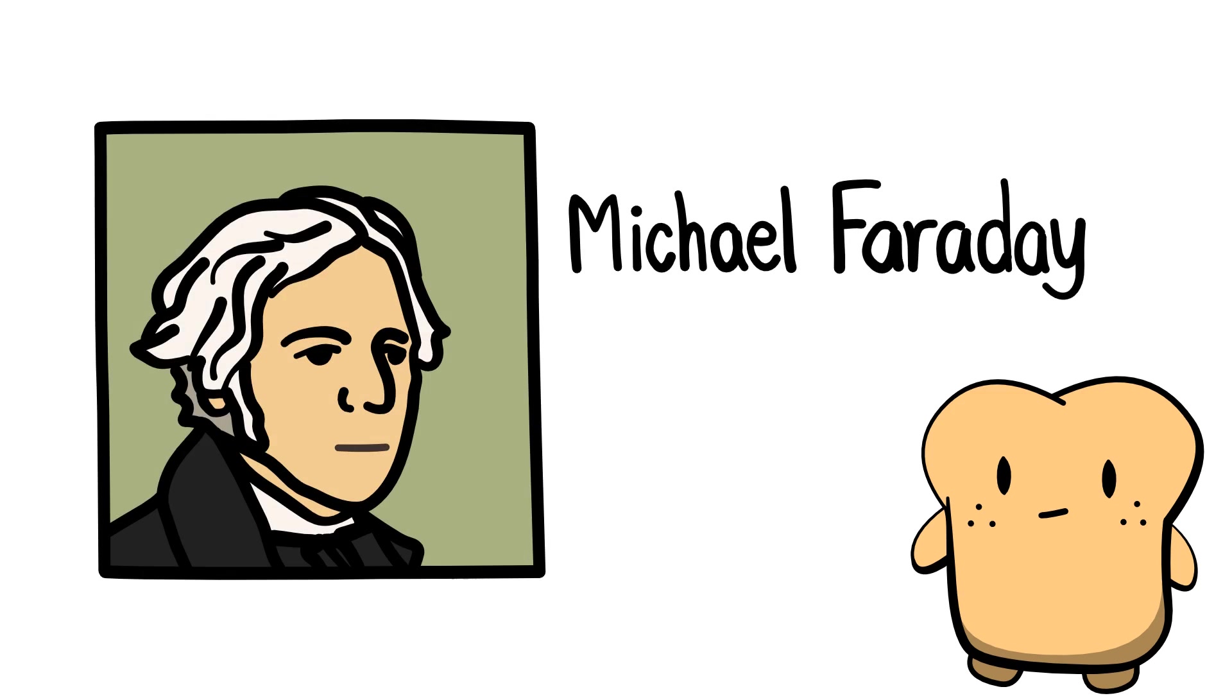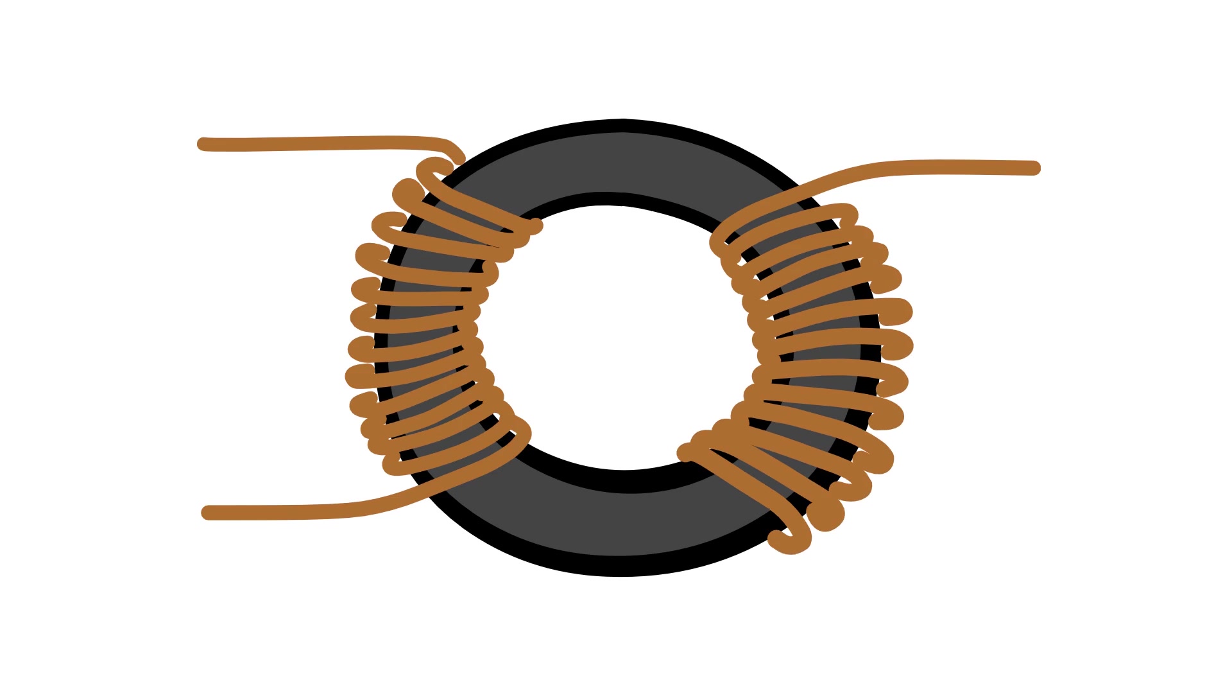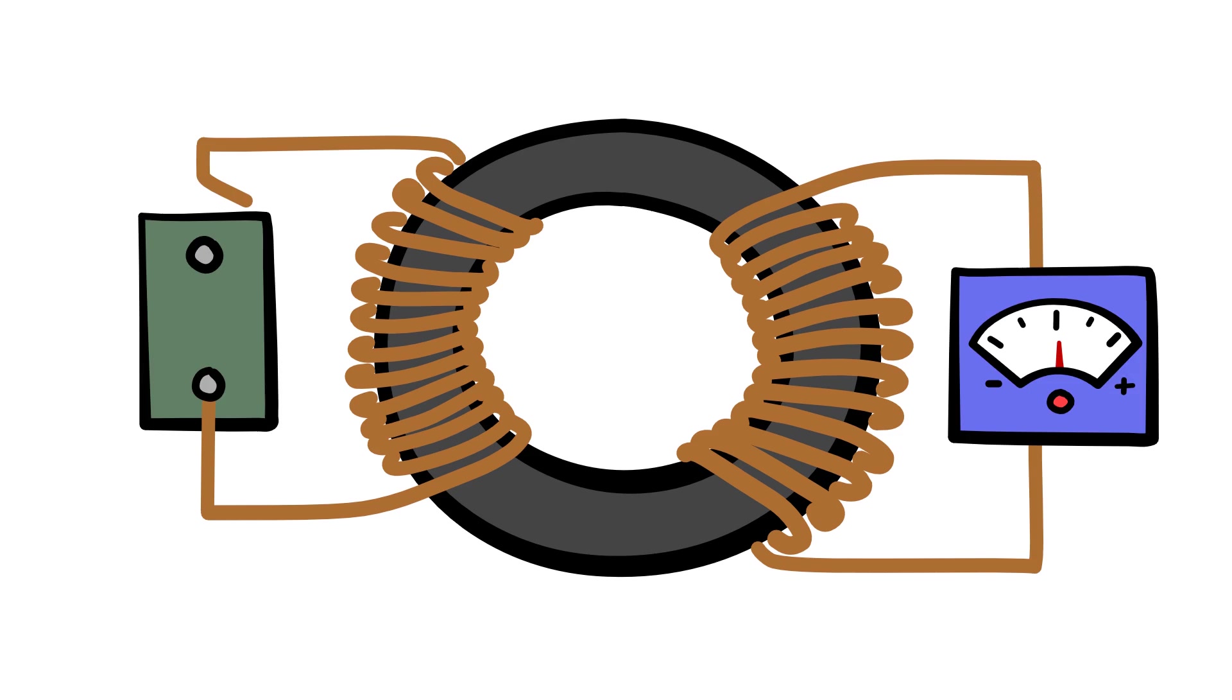In 1831, an English scientist named Michael Faraday published his observations based on work that had been previously done by Ørsted. In his experiment, Faraday wrapped two coils of wire in the same direction on opposite sides of an iron ring. He found that passing an electric current across the wire produced a brief current in the second wire.